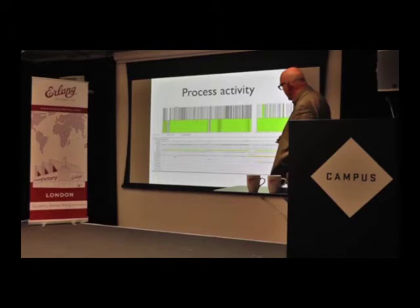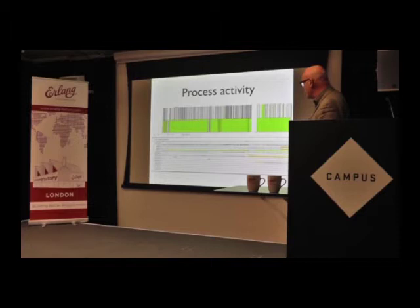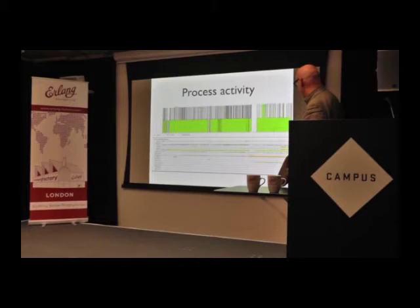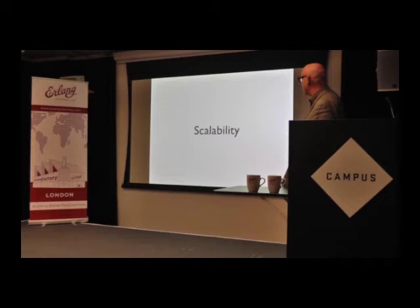You can also see the activity of a selection of processes over a particular time period. Green signifies that something is running, and orange signifies that it's runnable but not running. So you can see very clearly over that time period what is actually running and what is potentially runnable — a very clear picture about what's going on.